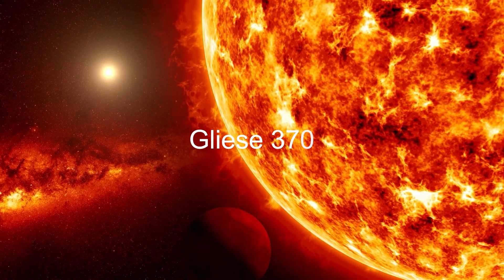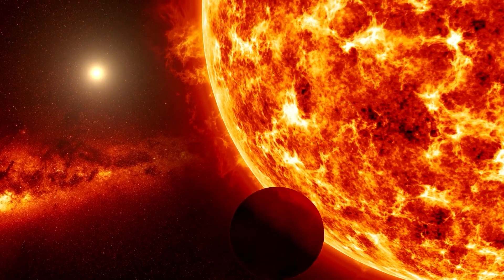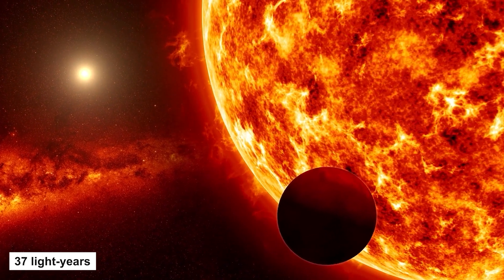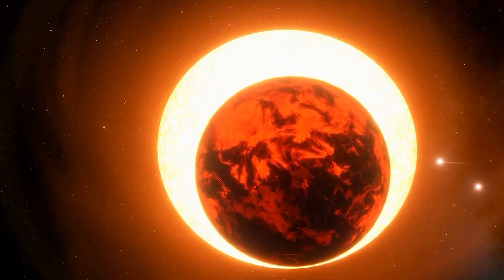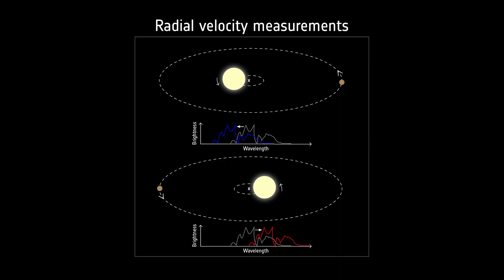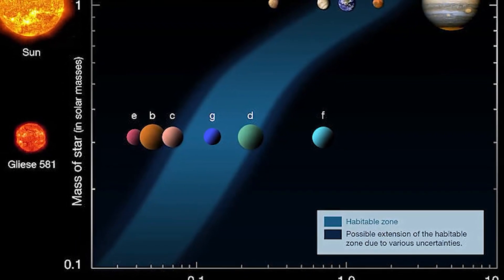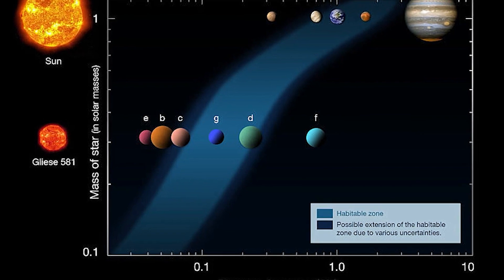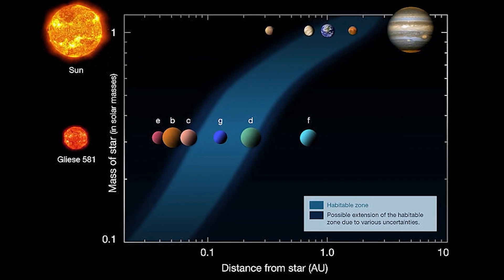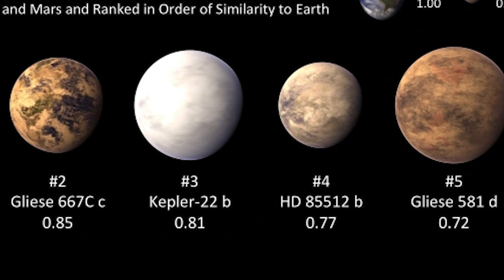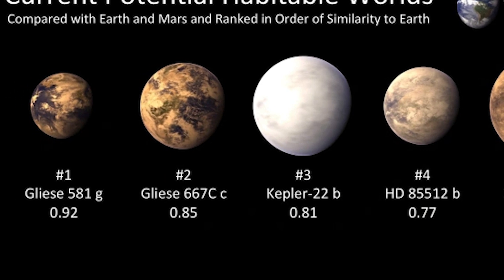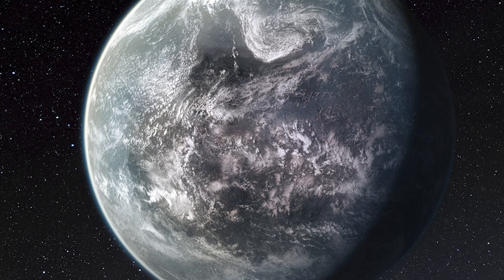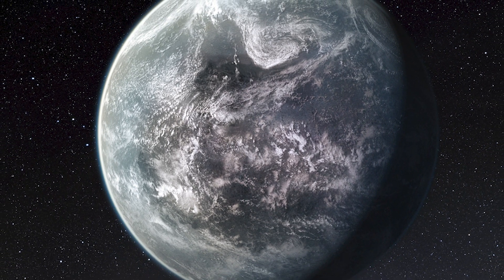Gliese 370. Nestled near the orange dwarf Gliese 370, a mere 37 light-years away from our home planet, this exoplanet has captured the attention of astronomers and dreamers alike. Discovered back in 2011 through the innovative radial velocity method, Gliese 370b has piqued our curiosity with its unique characteristics. As we know, not every star is accompanied by a planetary system. Gliese 370, however, offers a delightful exception, housing a single exoplanet designated as Gliese 370b.